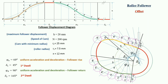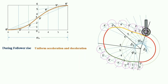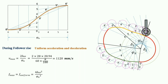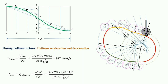This is the final cam profile. Now we calculate the maximum velocity and maximum acceleration for follower rise: Vmax is equal to 1120 mm per second, and the uniform acceleration is 44800 mm per second squared. For follower return, the maximum velocity is 747 mm per second and the uniform acceleration is 19900 mm per second squared.